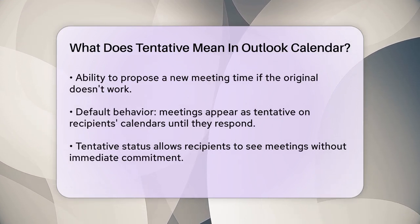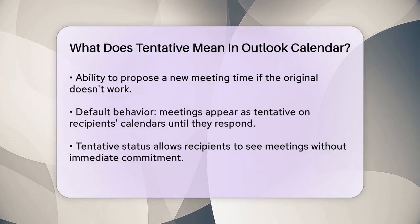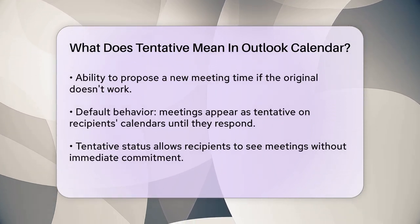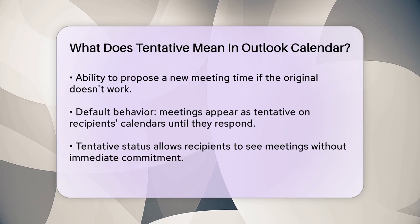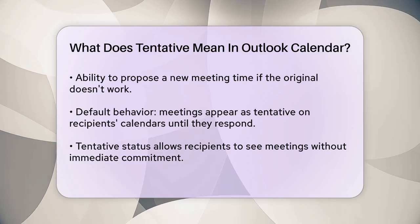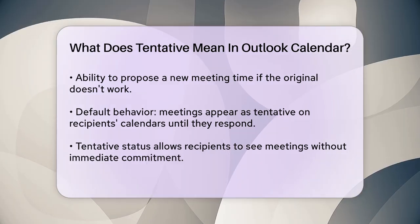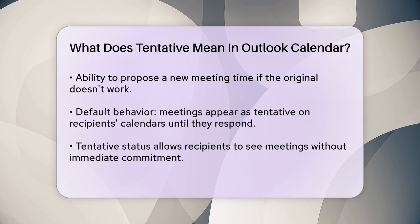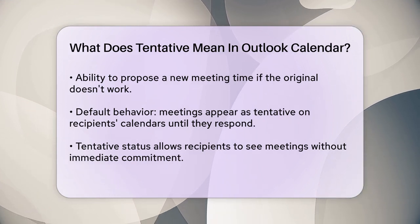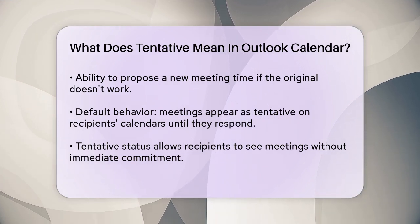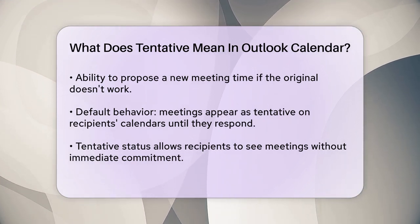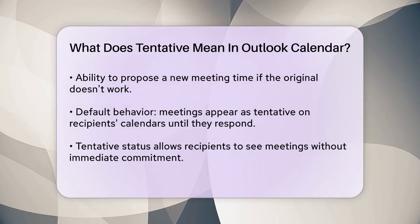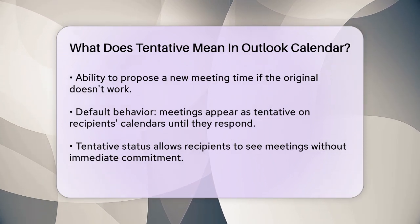By default, when you send a meeting request in Outlook — especially if you're connected to an Exchange server — the meeting will automatically appear on the recipient's calendar as tentative until they respond. This allows the recipient to see the meeting on their calendar and decide how to proceed without immediately committing to it.